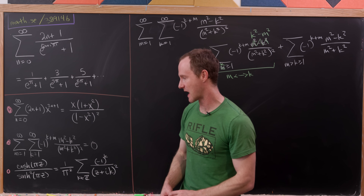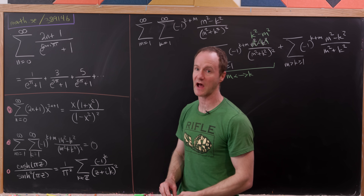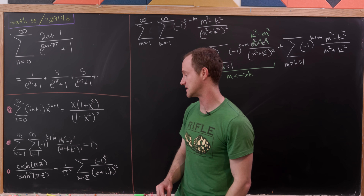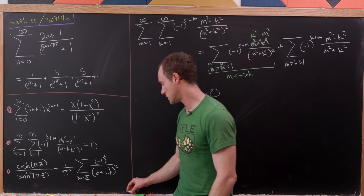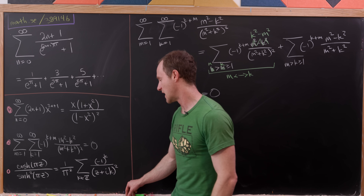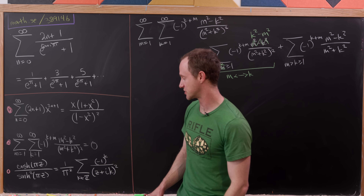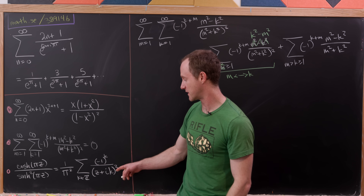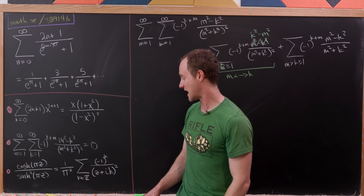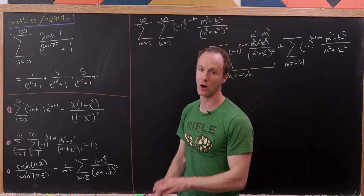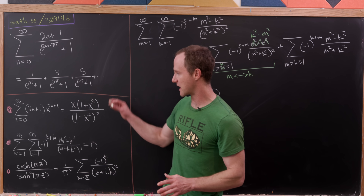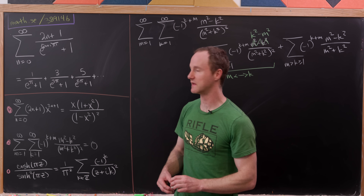Before we dive into our derivation of the closed form, let me point out the third tool, which we did in a previous video: cosh(πz) / sinh²(πz) = (1/π²) times the sum over all integers k of (−1)^k / (z + ik)². Now that we've got our tools ready, let's jump into the derivation.